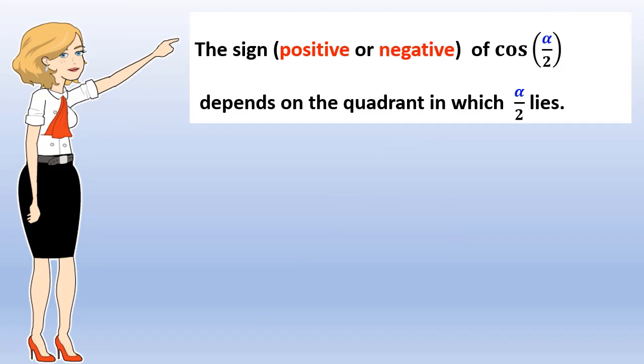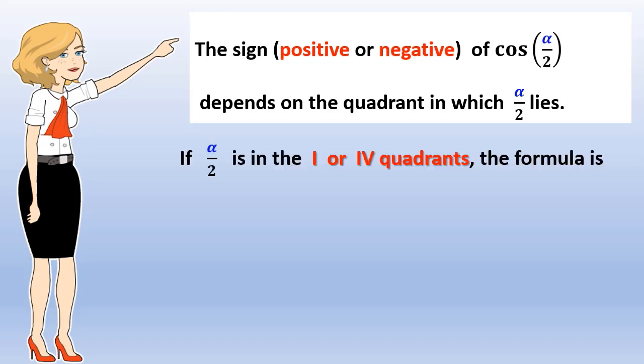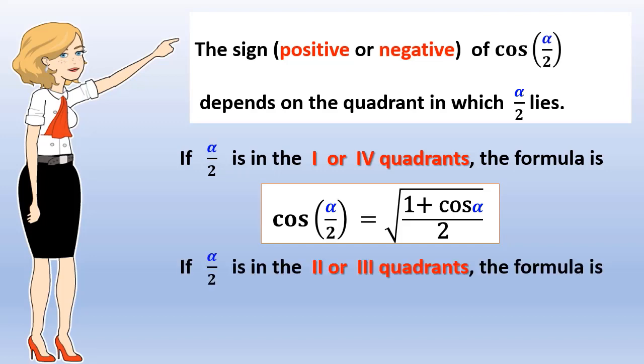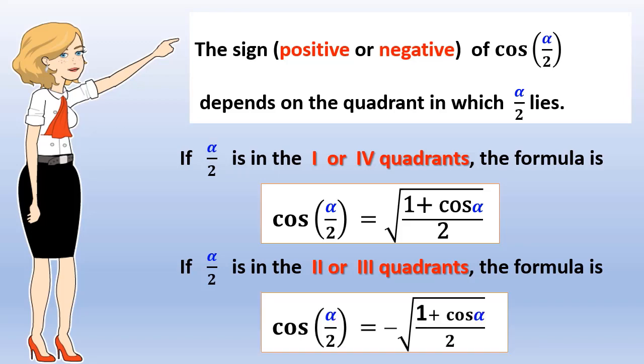The sign of cosine of alpha over 2, whether positive or negative, depends on the quadrant in which alpha over 2 lies. If alpha over 2 is in the first or fourth quadrant, the formula uses the positive case. If alpha over 2 is in the second or third quadrant, the formula uses the negative case.